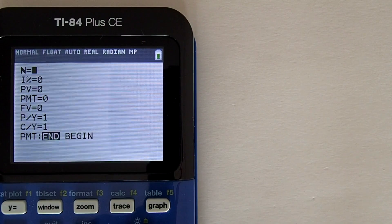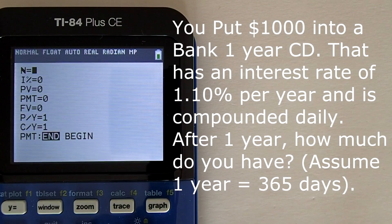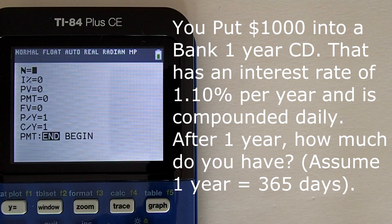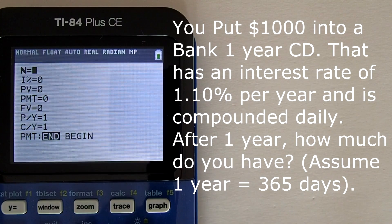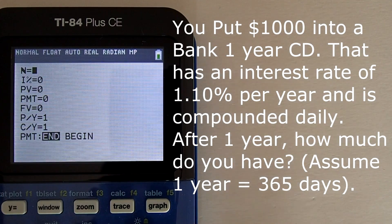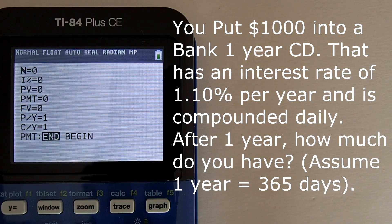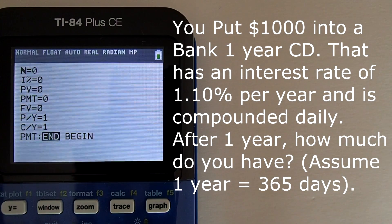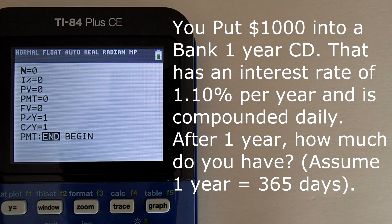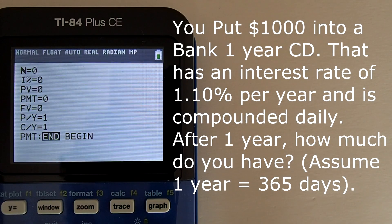Let's take a look at a future value problem. You put $1,000 into a Bank 1-Year Certificate of Deposit, CD, that has an interest rate of 1.1% per year, that is an APR of 1.1%, and is compounded daily. After one year, how much money do you have? Assume one year equals 365 days.